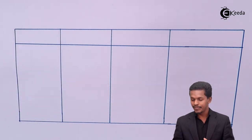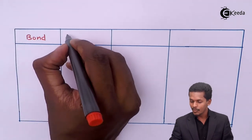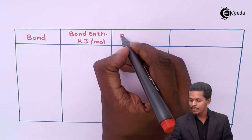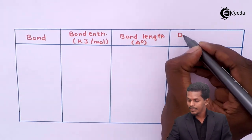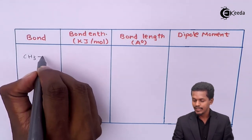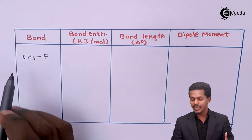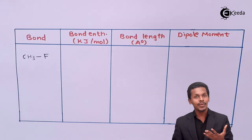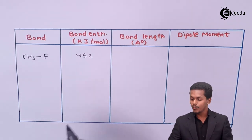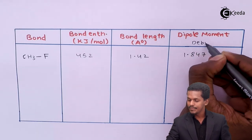Looking at the diagram, we compare the bond enthalpy (in kJ/mol), bond length (in Ångström), and dipole moment (in Debye) for different alkyl halides. For methyl fluoride (CH₃F), the bond enthalpy between carbon and fluorine has been found to be 452 kJ/mol, the bond length is 1.42 Å, and the dipole moment is 1.847 D.